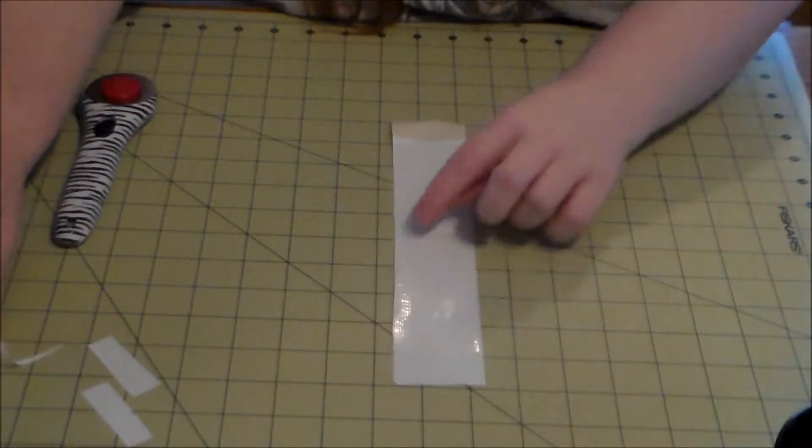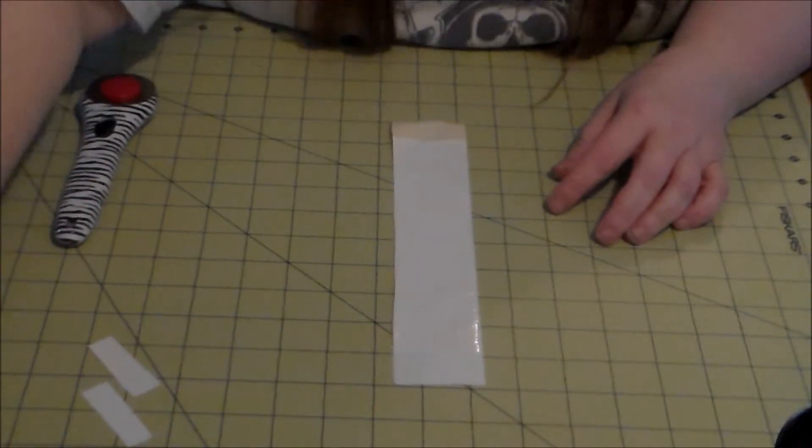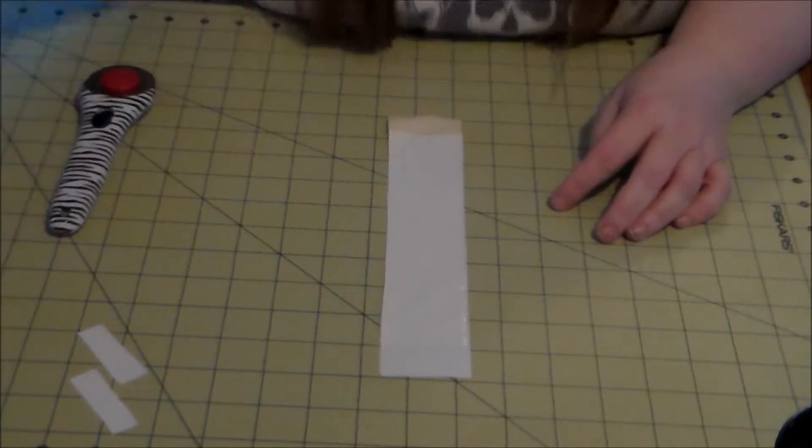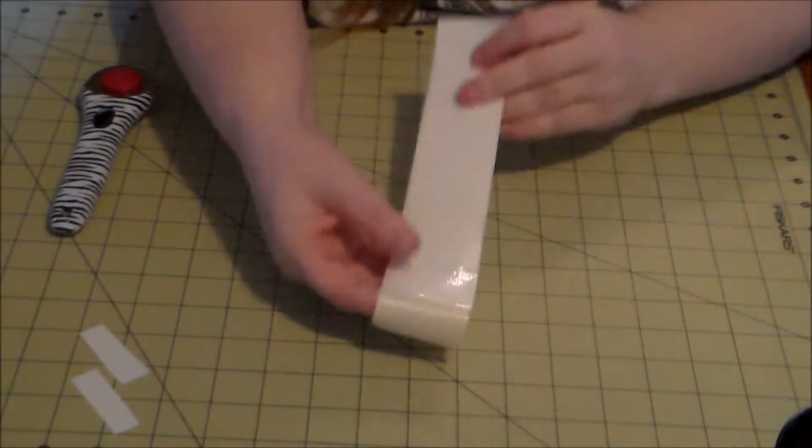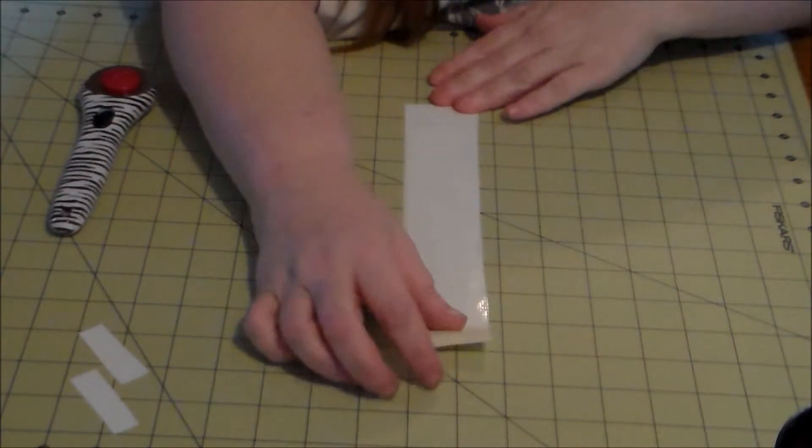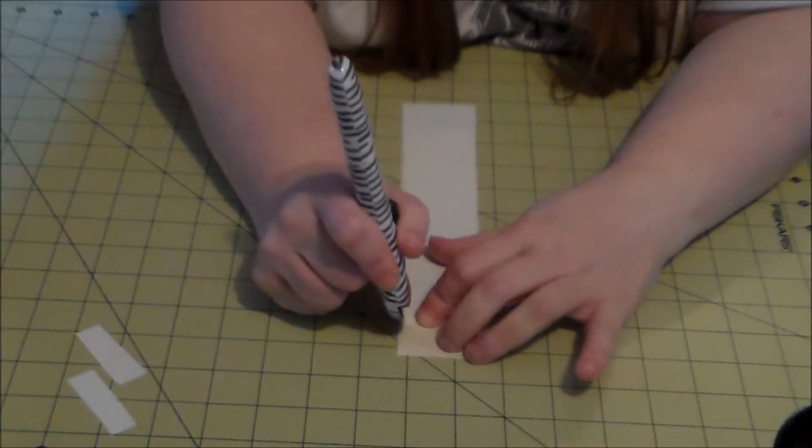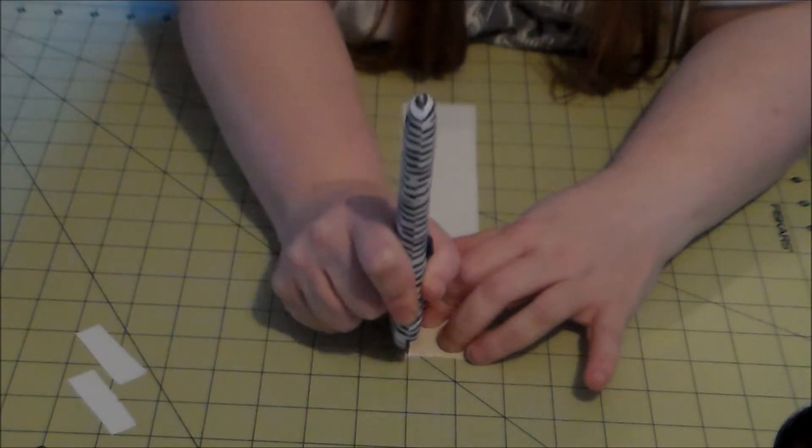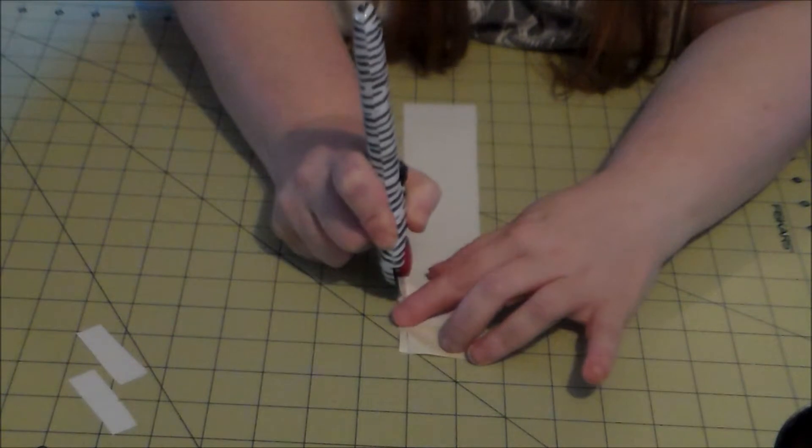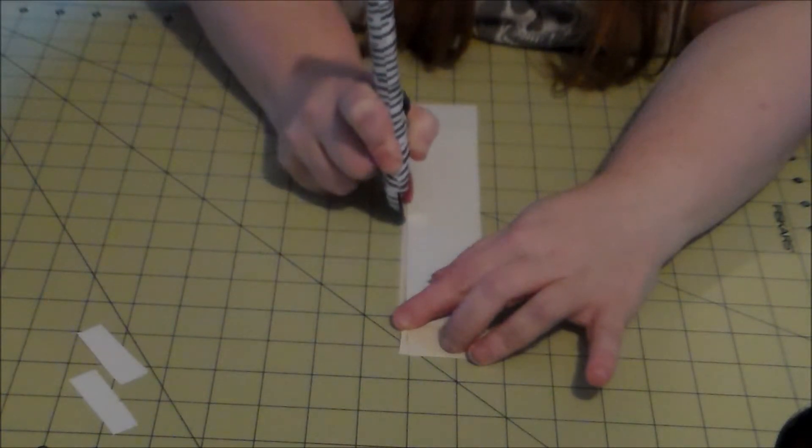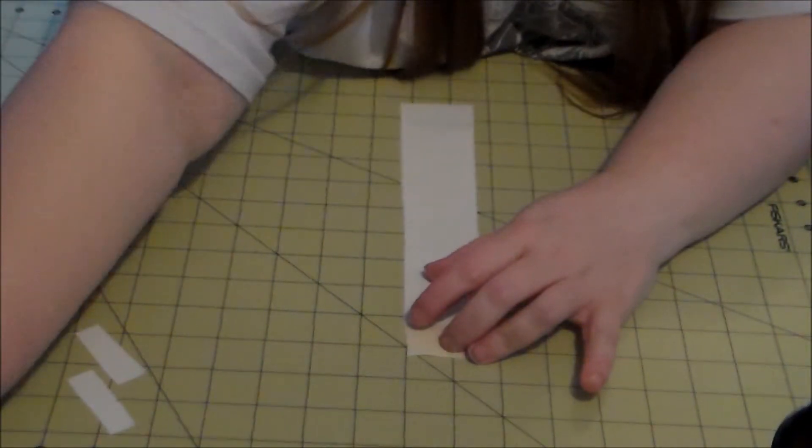You do not want any of the sticky stuff out to touch anything, especially if you're making these into like hair bows. You do not want any sticky stuff at all to be showing. Because then it just rips your hair out. And if anybody knows duct tape and hair like I do, you know it's painful.